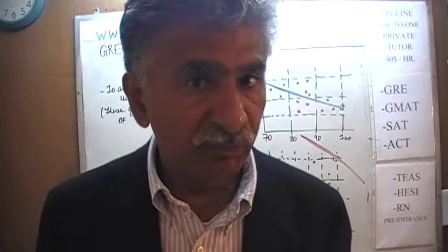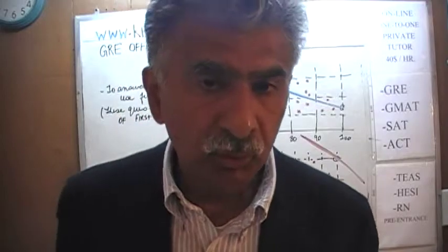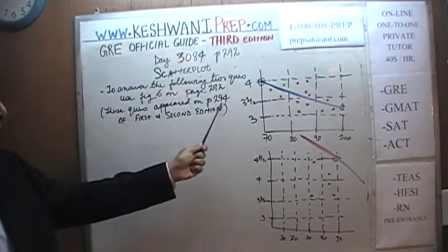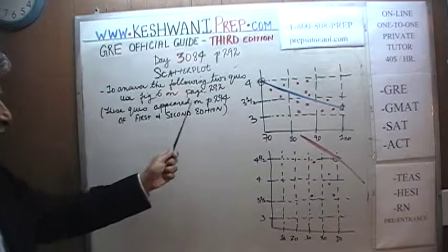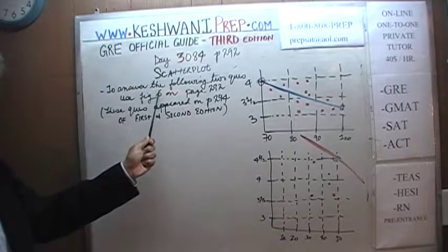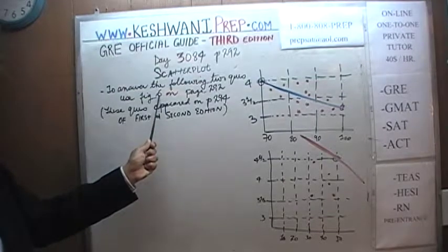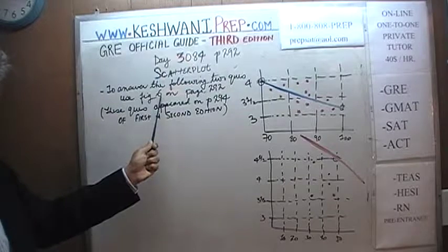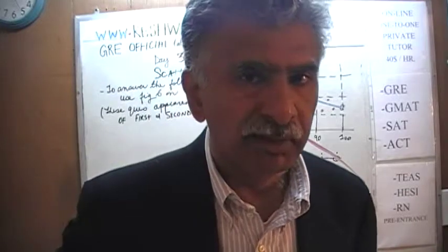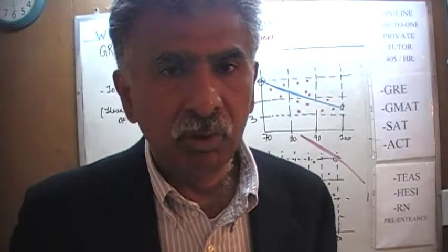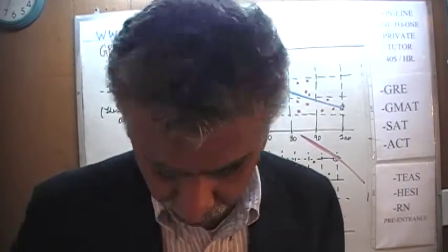If you happen to come across the first or second edition of this book, you will find the exact two problems on page number 294 of both the first and second editions. It pertains to the same data set on page 292, figure 6. Turn to page 292 of the third edition, figure 6, where we deal with 50 bicyclists. Yesterday we did the condensed version with only 10 bicyclists; today we answer the two questions from the actual exam with all 50 observations.